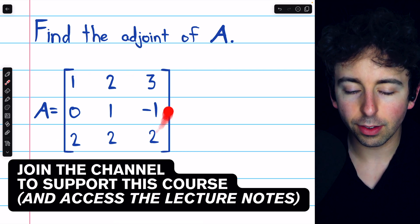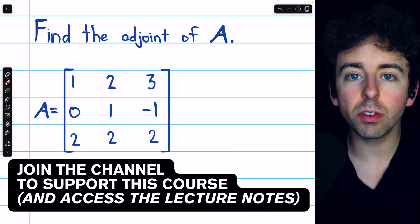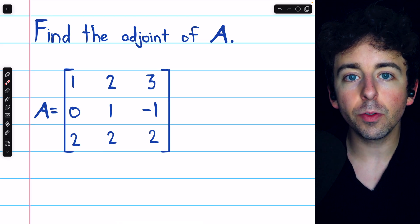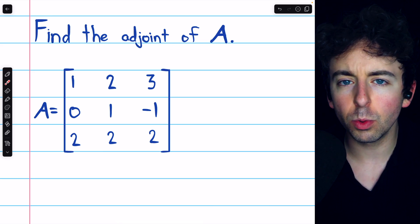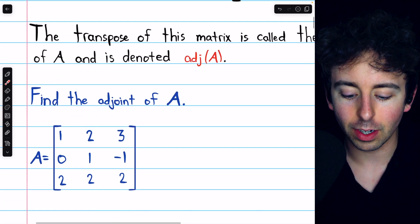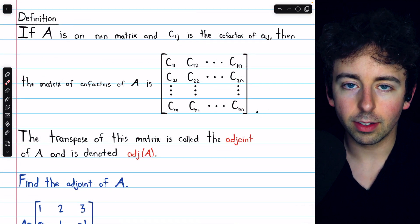Let's find the adjoint of this 3x3 matrix and then use that to find its inverse. To find the adjoint of the matrix, we should begin by recalling the definition of adjoint. Here that definition is.